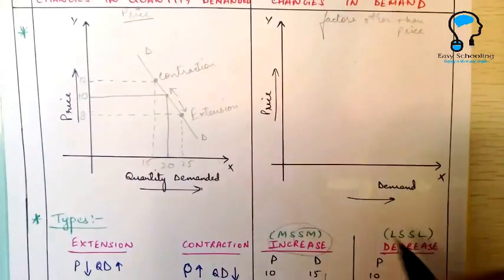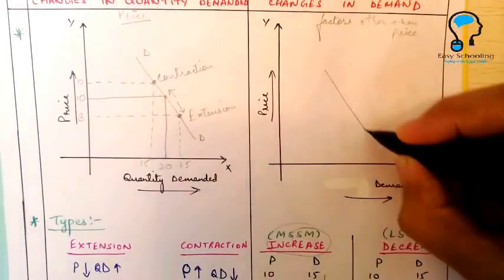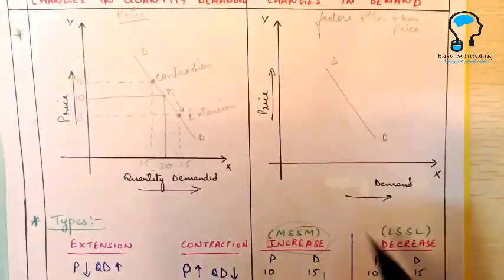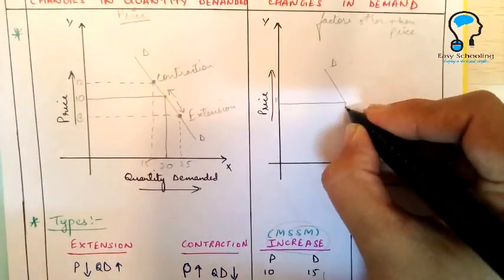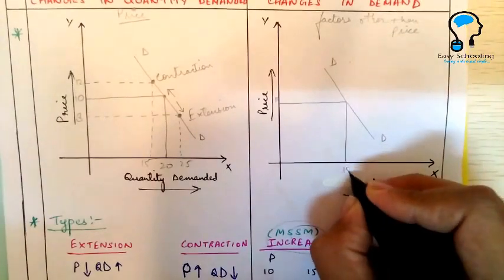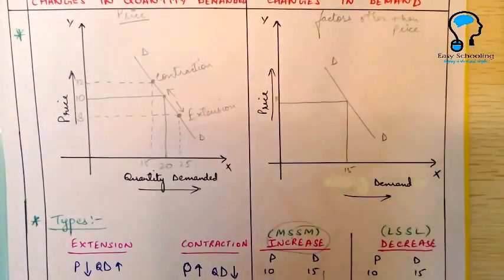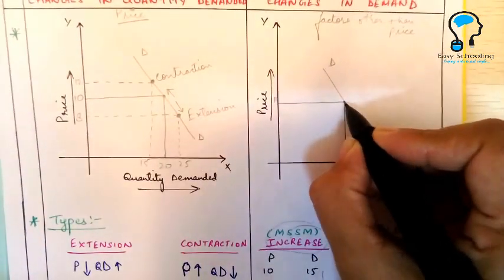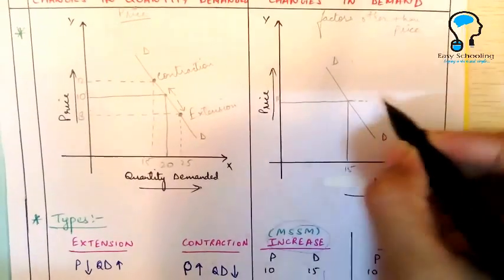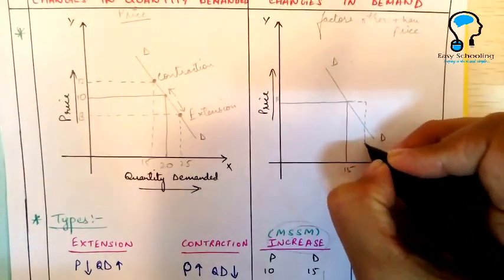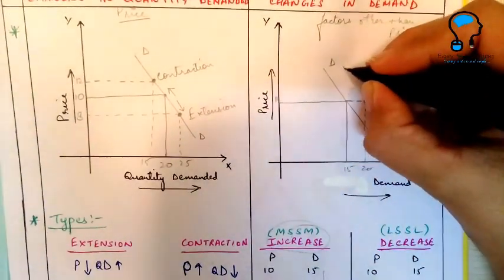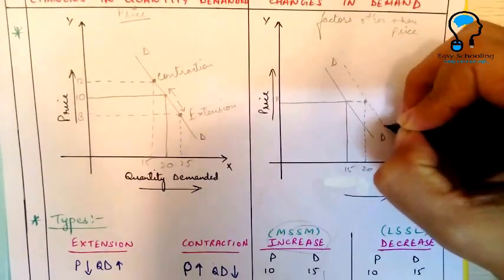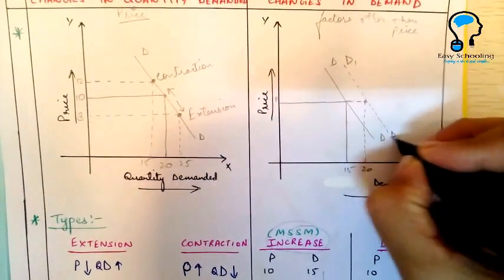How are we going to show it on the graph? Suppose this is our original demand curve DD. Price is on the y-axis at 10, and demand is on the x-axis at 15. Now demand has increased from 15 to 20 but the price is the same, so we shift the curve to the right — demand is now 20 — and this gives us a new demand curve which we will call D1.